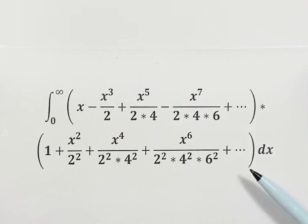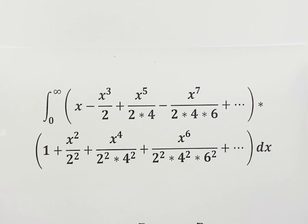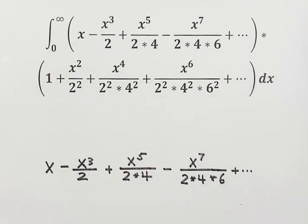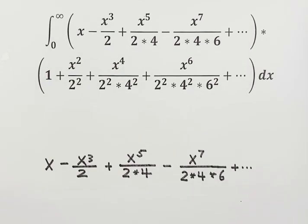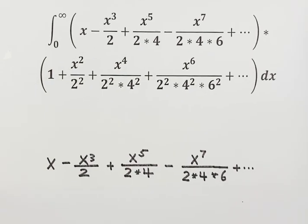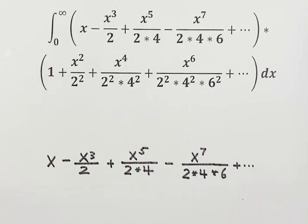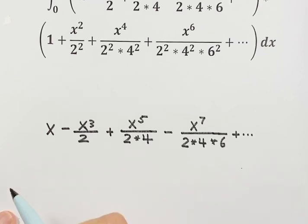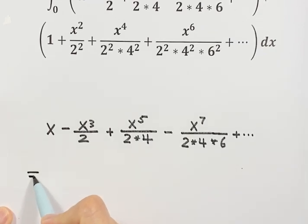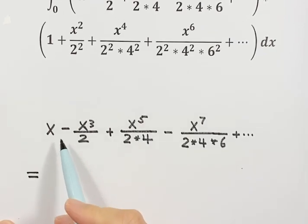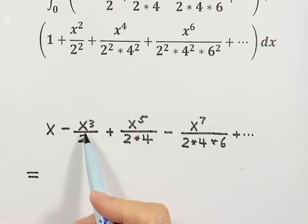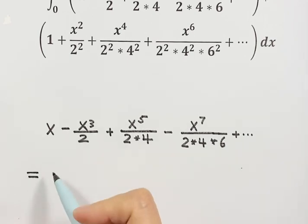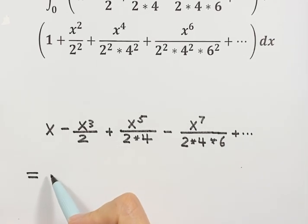So now let's work on the first part. This is the first part, so let's simplify it. They have a common factor x, so let's take out x.